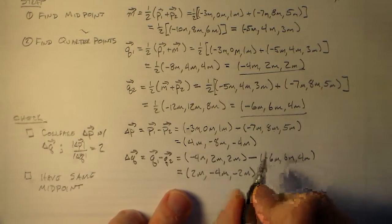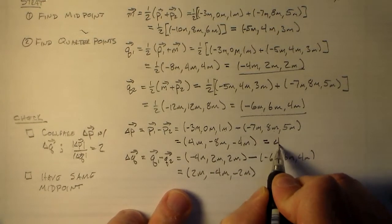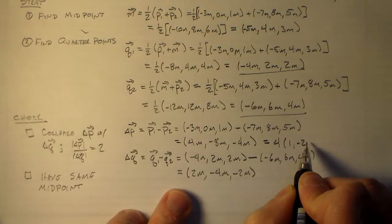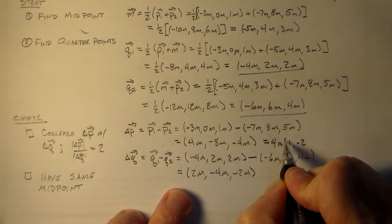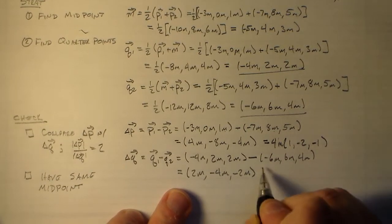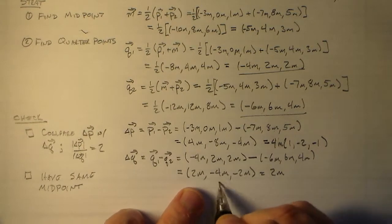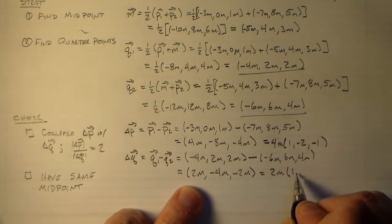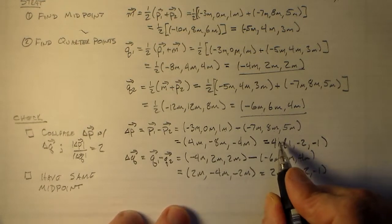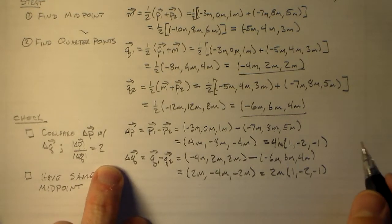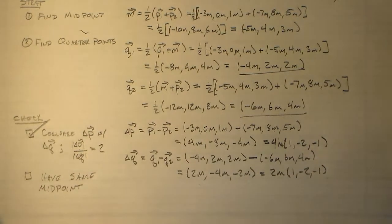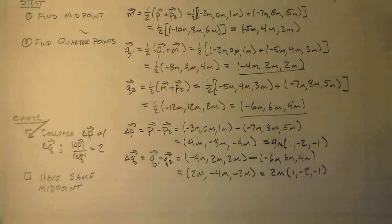That looks like we're right. Let's see. We've got a common factor here, which is 4. We have 4 meters times 1 minus 2 and minus 1. And here we have 2 meters, common factor of 2, and we have 1 minus 2 minus 1. And 4 over 2 is 2, so we're okay. Check. How good is that? So we know we've got the right direction and we've got the right magnitude. Now all we care about is, is it in the right place?